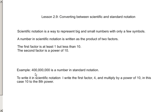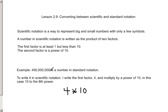The number 400 million is in standard notation — the typical way we see a number. To write it in scientific notation, I write the first factor 4, then multiply it by a power of 10. I've got 8 zeros, 8 places here. To represent 400 million in scientific notation, I would write 4 times 10 to the 8th power.